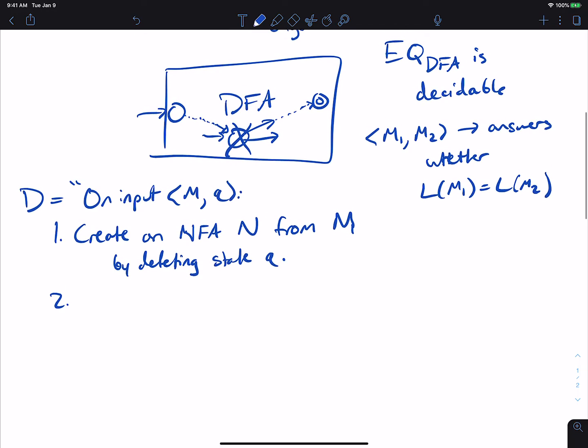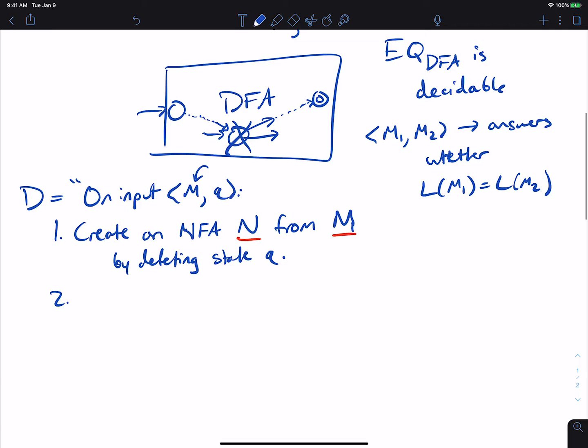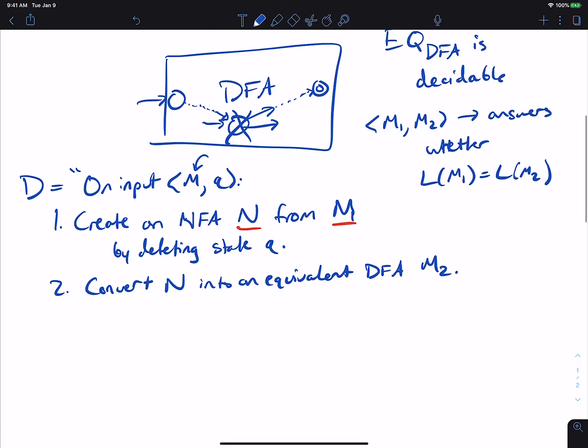If we want to answer whether or not this NFA N and M have the same language, we have EQ_DFA here, but it requires two DFAs. I have a DFA, which is the M thing right here, and I have an NFA, but we know how to convert an NFA to a DFA. So convert N into an equivalent DFA, let's call it M2. Then ask the decider for EQ_DFA on input M, which is the original DFA, and M2, which is the result of deleting the state and then converting it back into a DFA.